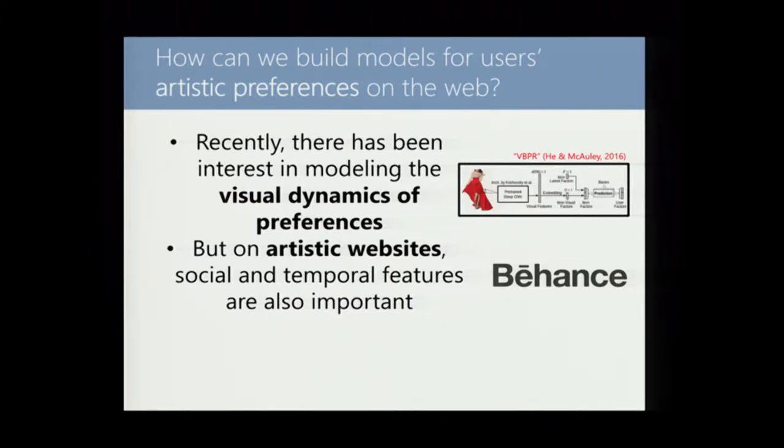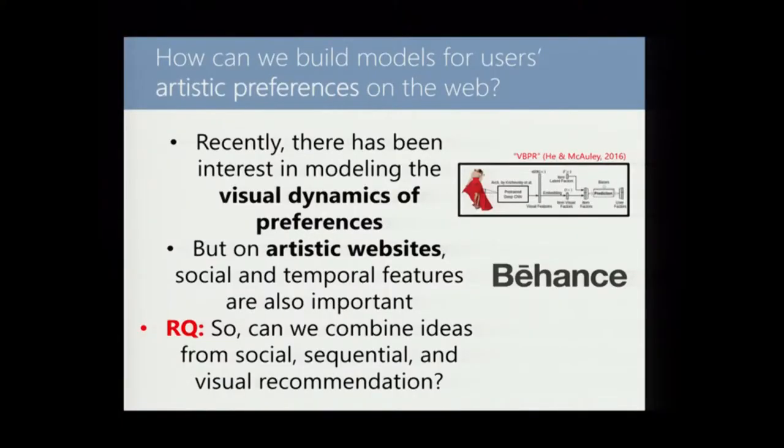However, if you're thinking of something like an artistic website like behance.com, there are going to be other features besides visual appearance that might be important for recommendation. It could be social relationships that artists have to each other, people might tend to like each other's work in a way that goes beyond just the visual appearance. And there could also be temporal features as well. There might be trends that change in terms of what art people like over time, and there might also be things like consistency effects. You might want to recommend art that is visually consistent with something people have viewed previously.